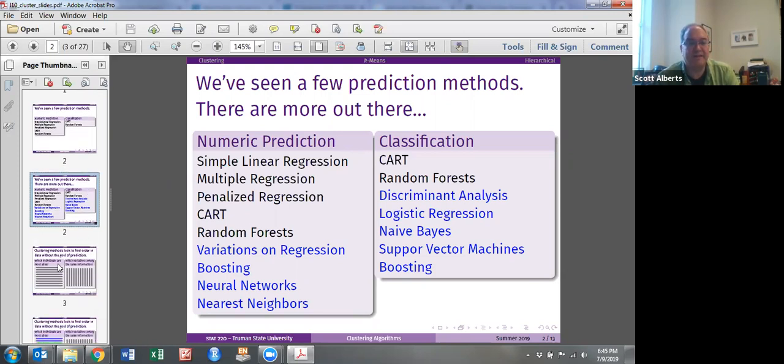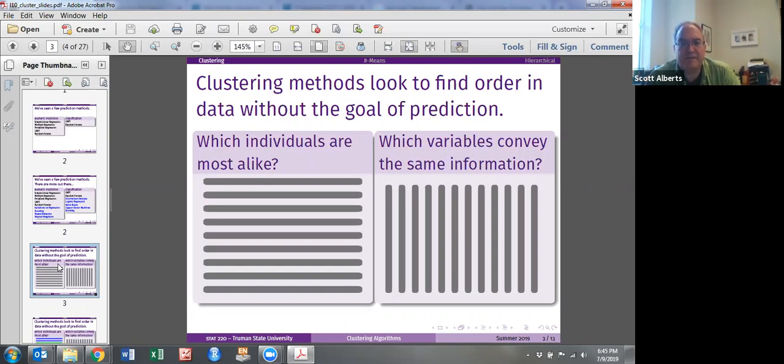So the first one is the idea of clustering. Clustering methods are how you try to take individuals and rather than trying to predict something about them, we instead try to think about which individuals go together or which variables go together. So rather than trying to say, can I predict how much a customer is going to spend, can I instead predict the general category of being a good customer? A long time customer or a customer who spends a lot of money on each purchase, or maybe you have a new product and you're trying to identify which customers might be interested.